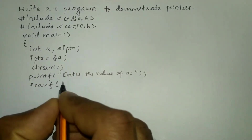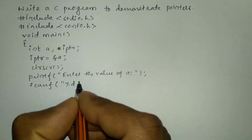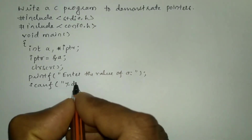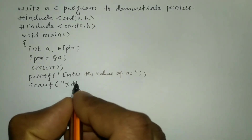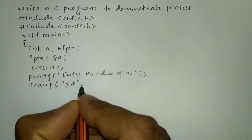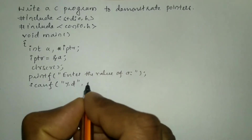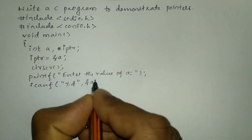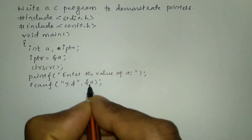In scanf, in double quotation marks I will write format specifier %d, then put comma and ampersand of a.